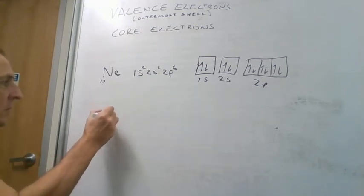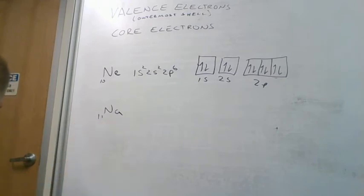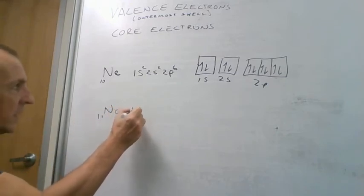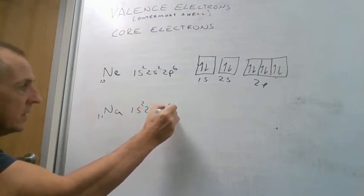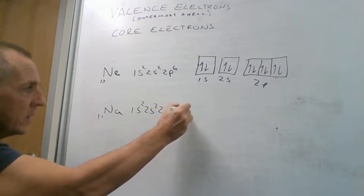If we go one atom further and we have sodium, then we have 11 electrons, so we have 1s2, 2s2, 2p6, and then 3s1.